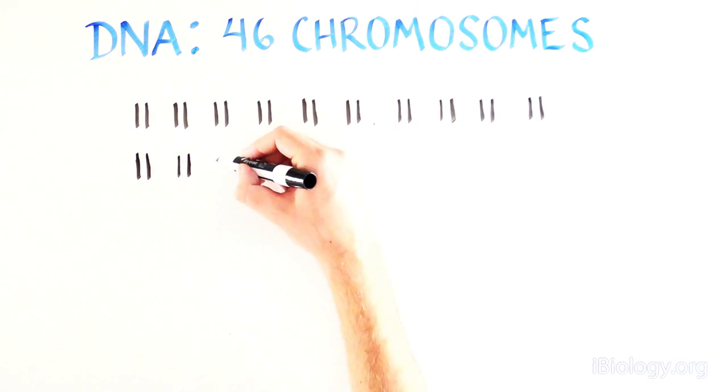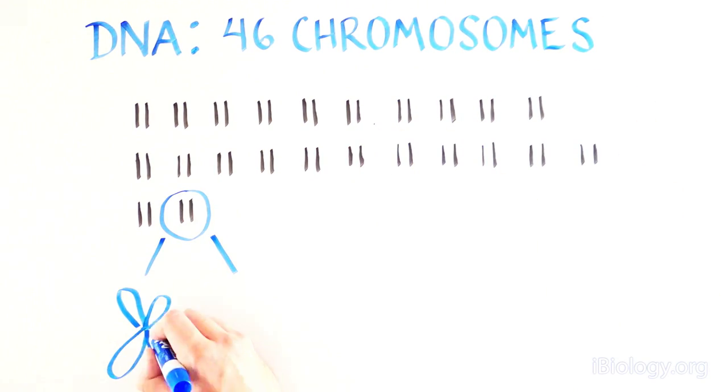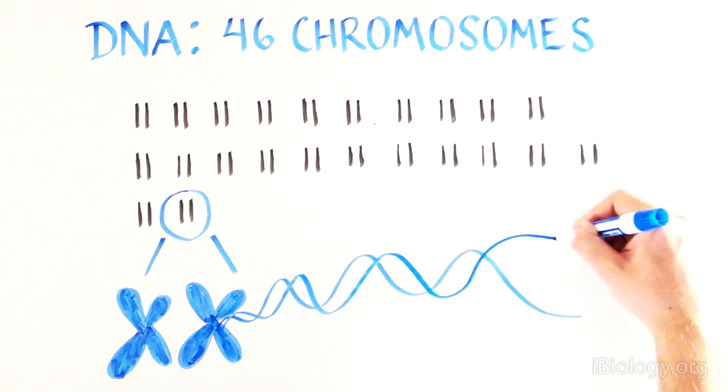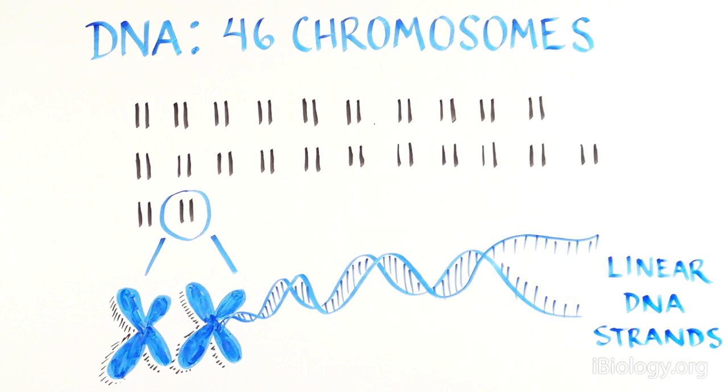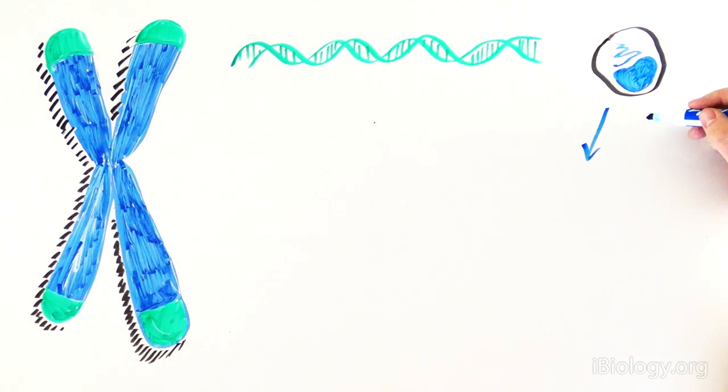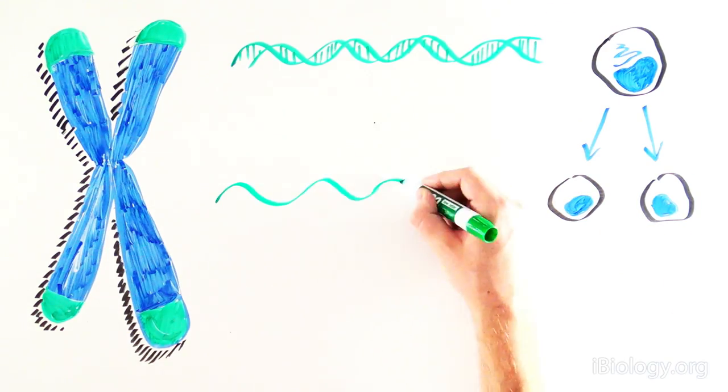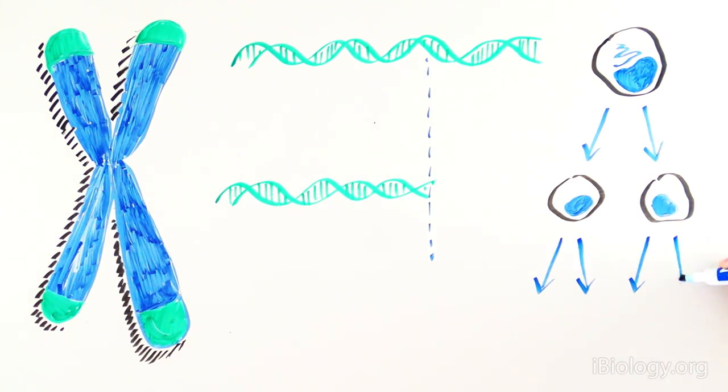This vast amount of information is organized in 46 individual chromosomes. Chromosomes consist of linear strands of DNA. As cells divide and our DNA gets replicated, the ends of linear chromosomes cannot themselves get copied.